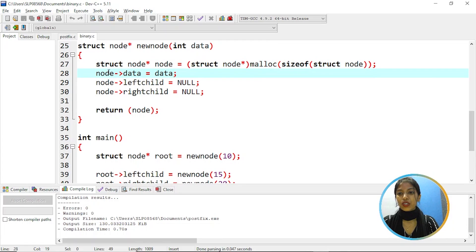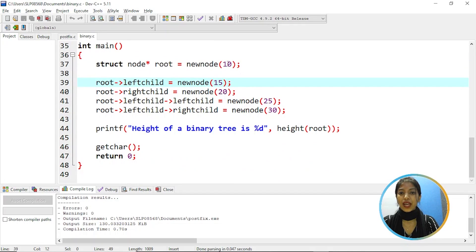So assigning data for a node's data and initially the nodes left child and right child is assigned to null and return node and coming to main function we are assigning values to every node. So root node is having the value 10 and root's left child is equal to 15, root's right child is equal to 20 and root's left child's left child is equal to 25 and root's left child's right child is equal to 30 and print the height of a binary tree.